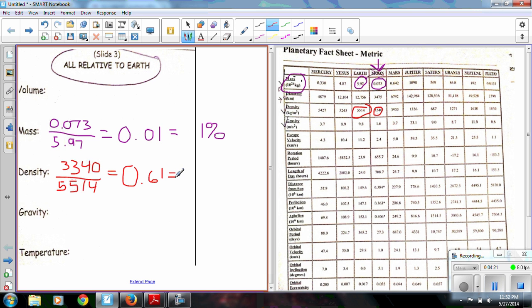So the density of the moon is 0.61 times the density of Earth. Or if I change this to a percent, it's 61%.